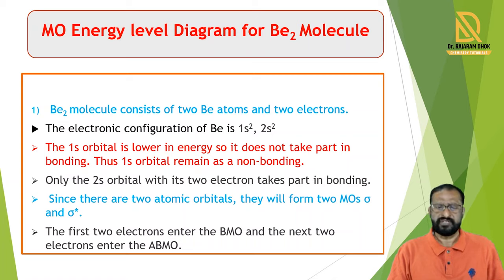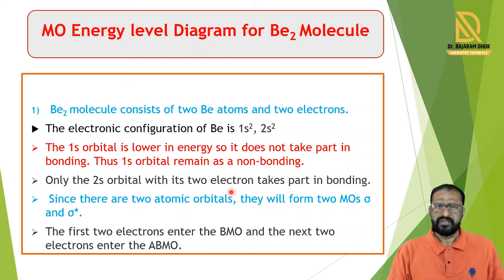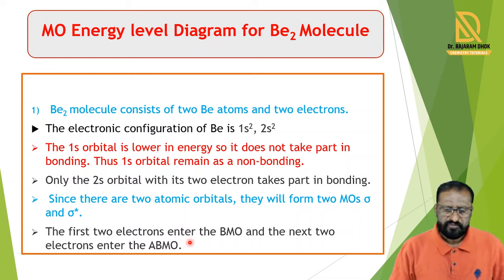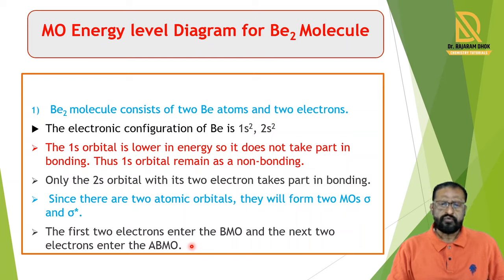Thus, the 1s orbital remains as non-bonding. Only the two 2s orbitals with their two electrons take part in the bonding. Since there are two atomic orbitals, these two atomic orbitals — 2s and 2s — combine with each other and form two molecular orbitals: one is sigma and the other is sigma star. The first two electrons enter the bonding molecular orbital and the next two electrons enter the anti-bonding molecular orbital. So, how is this molecular orbital energy level diagram drawn? We will see the molecular orbital energy level diagram.